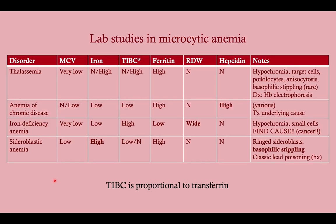Quick high-yield recap: a patient comes in with fatigue, weakness, shortness of breath, pallor — get a CBC. Hemoglobin is low, you have anemia; check the MCV. MCV below 80 means microcytic anemia. Next step: iron studies, because iron deficiency is the number one cause in the U.S. If iron studies are all pretty normal, you're possibly dealing with thalassemia — check the smear. Target cells suggest thalassemia. Ethnic background matters too: Black or Asian, think alpha-thal; Mediterranean, think beta-thal. Definitive diagnosis of thalassemia is hemoglobin electrophoresis.